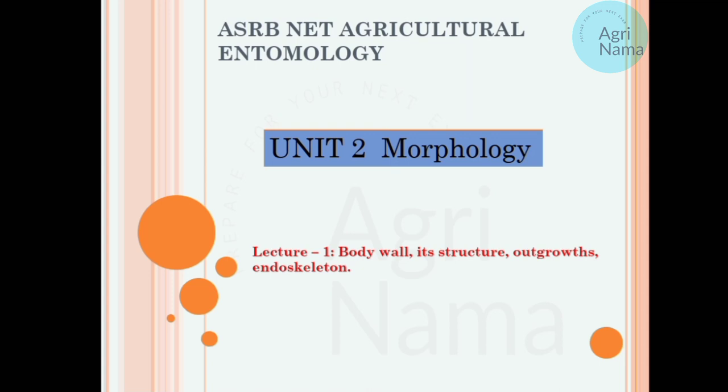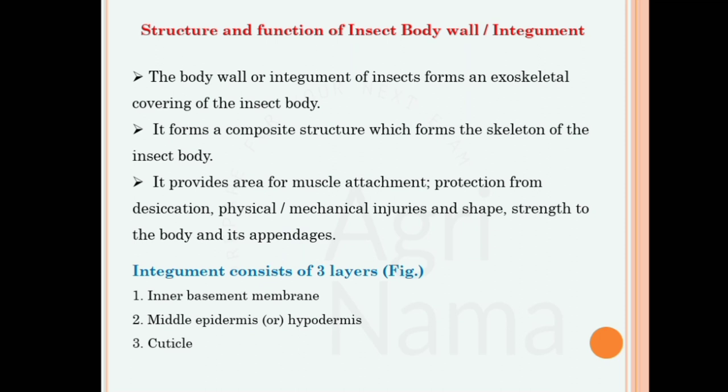First of all we have to know what body wall is. Body wall is the outermost covering of the insect body. As humans have skin, insects also have an outer covering which protects the insect body from outside injuries. It is a composite structure which forms the skeleton of the insect body. It provides area for muscle attachment, protection from desiccation (water loss), physical and mechanical injuries, and provides shape and strength to the body and its appendages.